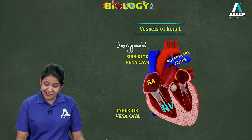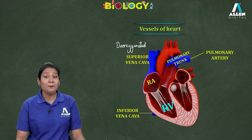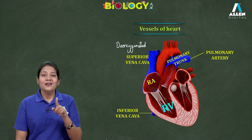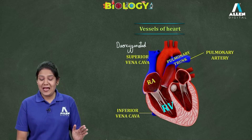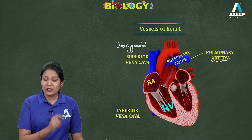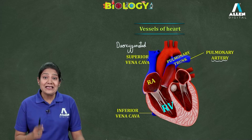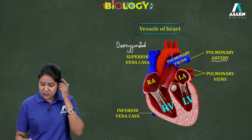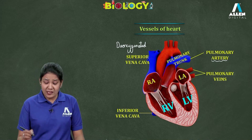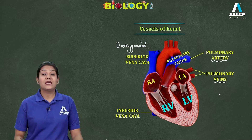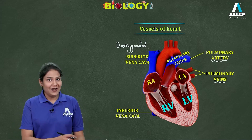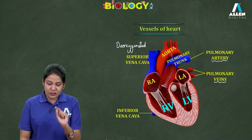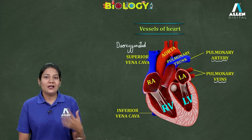The superior vena cava drains deoxygenated blood into the right atrium, and the inferior vena cava also drains deoxygenated blood into the right atria. The pulmonary artery is an exceptional artery — although it carries deoxygenated blood, it is called an artery because it carries blood away from the heart. The pulmonary veins are also exceptional because they carry oxygenated blood towards the heart. Finally, the aorta supplies oxygenated blood to the body parts.